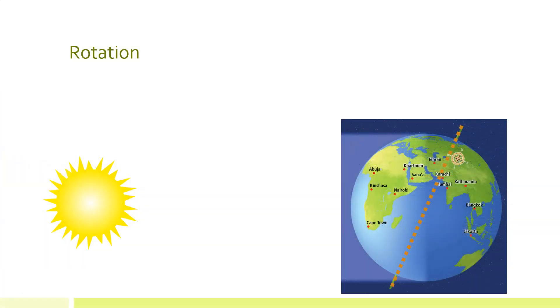The imaginary line that passes through Earth's center and the north poles is called Earth's axis. The spinning of Earth on its axis is called rotation. It takes 24 hours for one complete rotation, or for Earth to spin around one time. This is where our 24-hour day comes from.